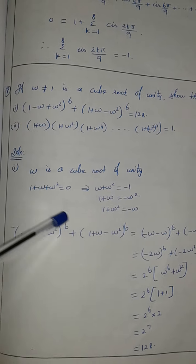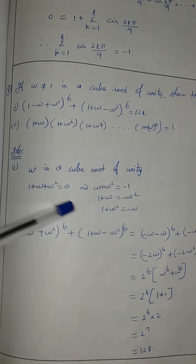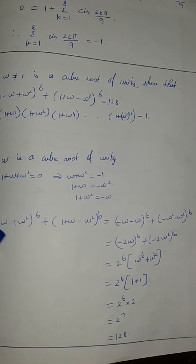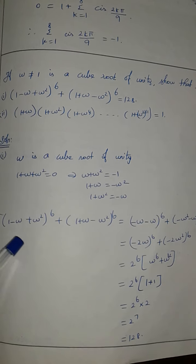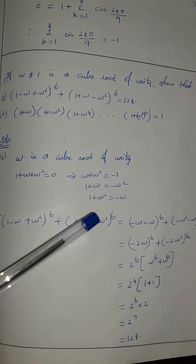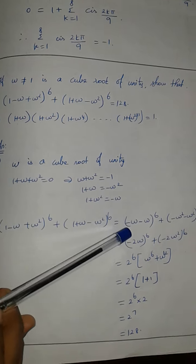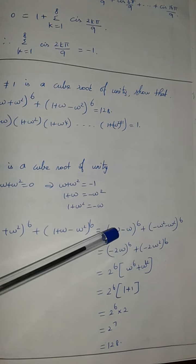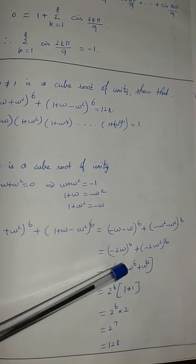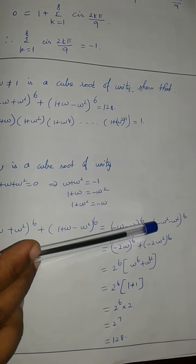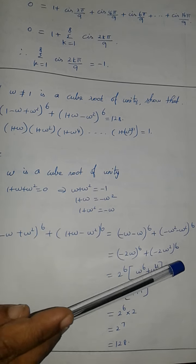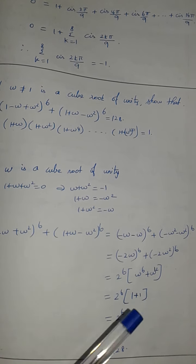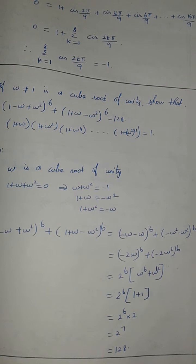Therefore, 1 plus omega is equal to minus omega squared, and 1 plus omega squared is equal to minus omega. We can make a table showing minus omega and minus omega squared. Now we get minus omega squared and minus omega. For 2 power 6 and minus omega squared, choosing these 2 cases, we get a negative 6 times and positive results.